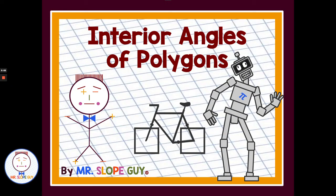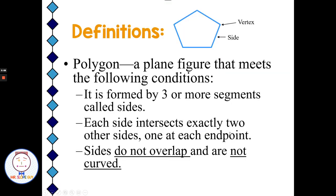Hello, Mr. Slope Guy here today to help you with interior angles of polygons. Let's start off with what is a polygon. A polygon is a plane figure, meaning that it lies in a two-dimensional flat plane.